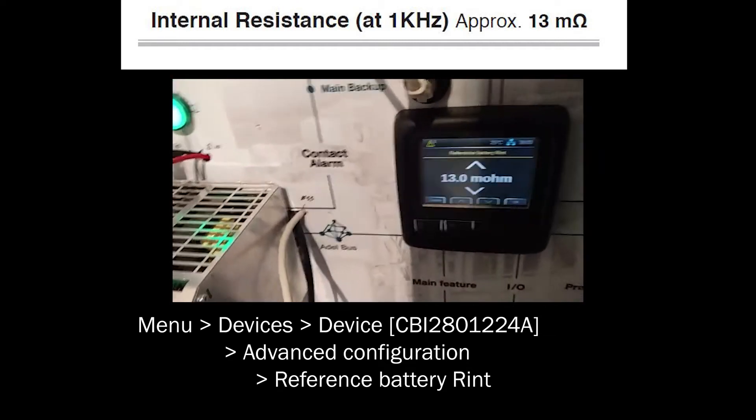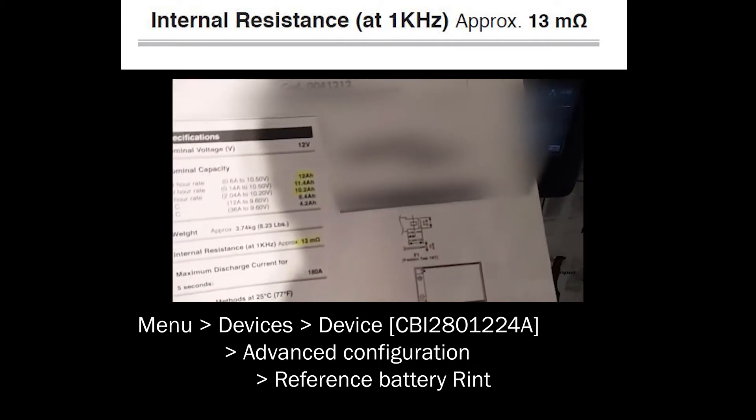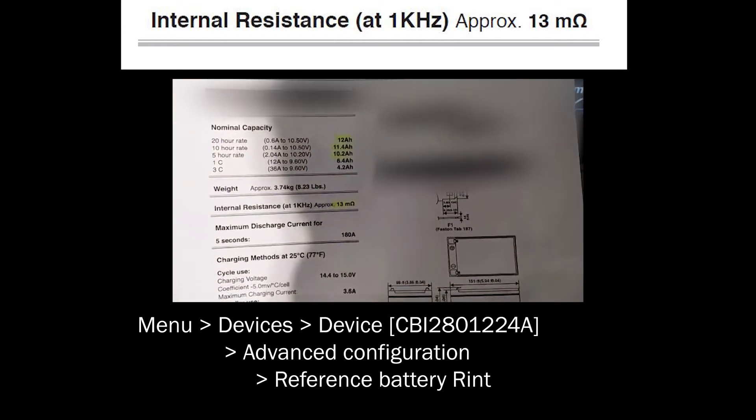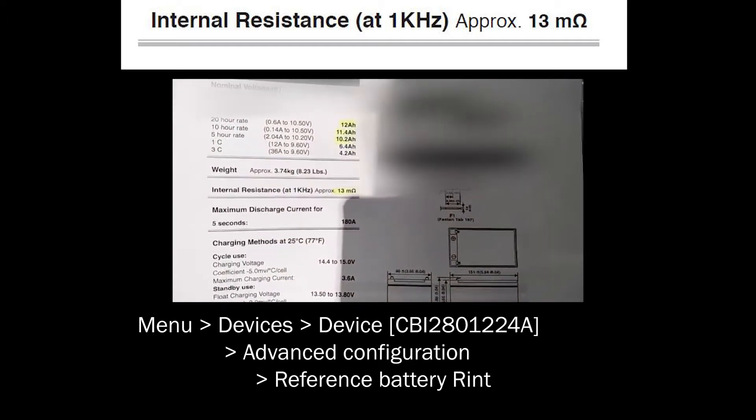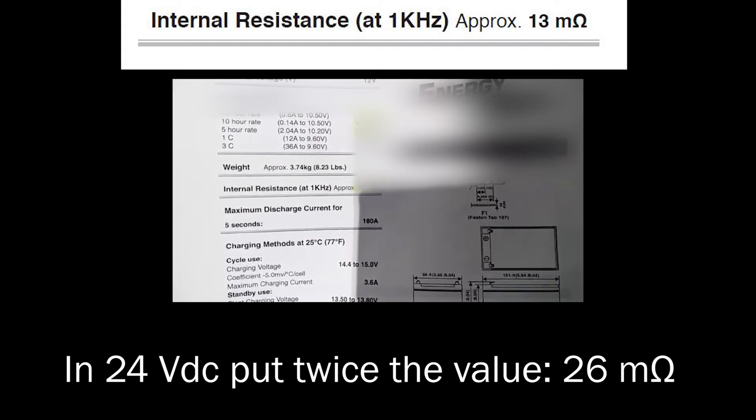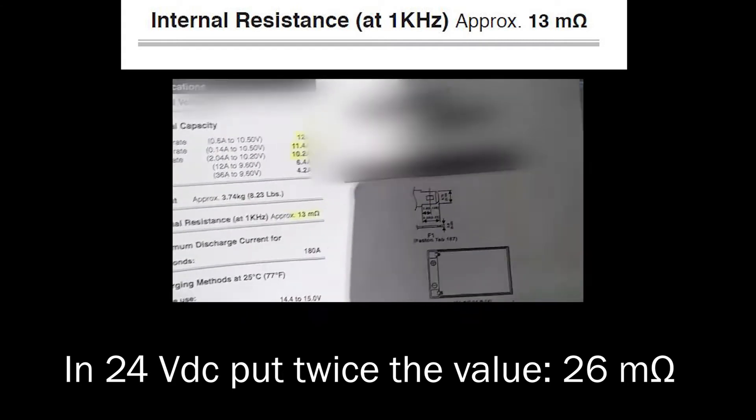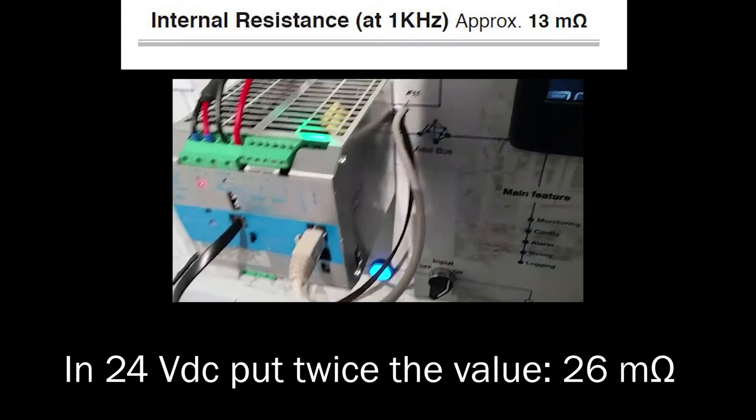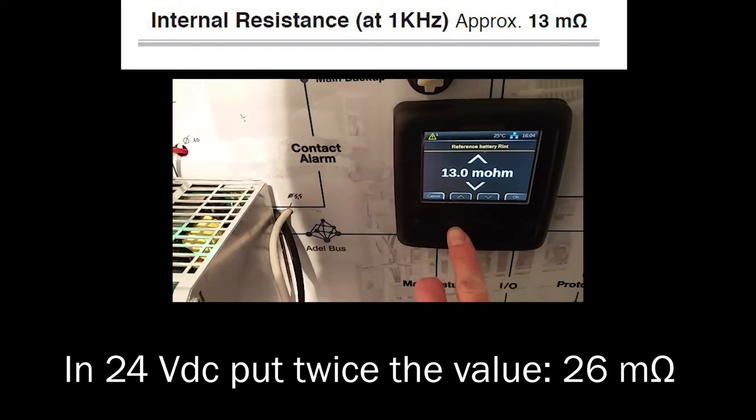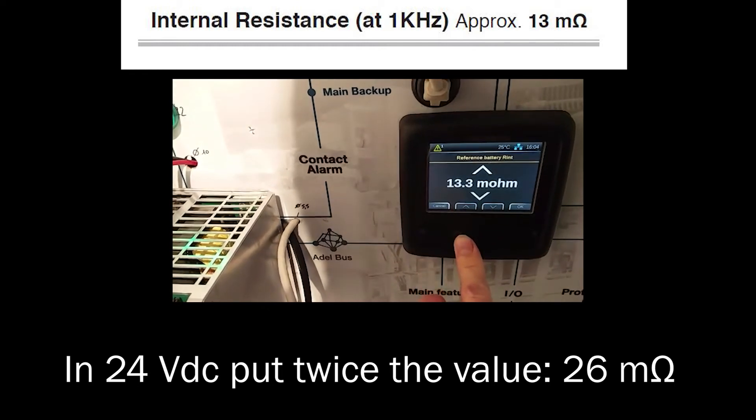Here you have to put the internal resistance of the string. So in this case, we have a single battery with internal resistance of 30 milliohm. So in 24 volt, you have to put twice the value, such as 26 milliohm.